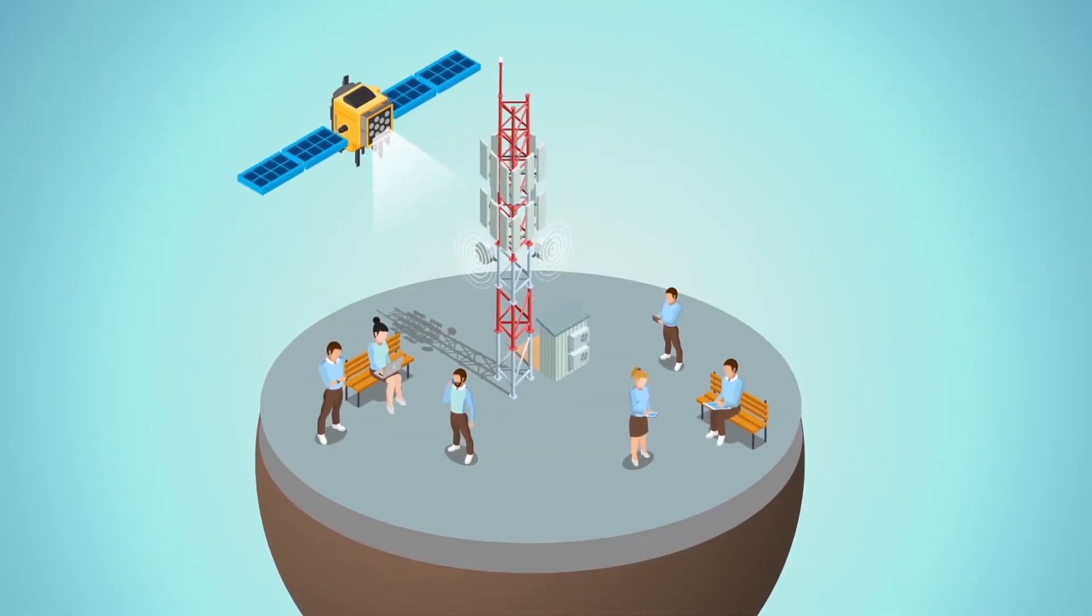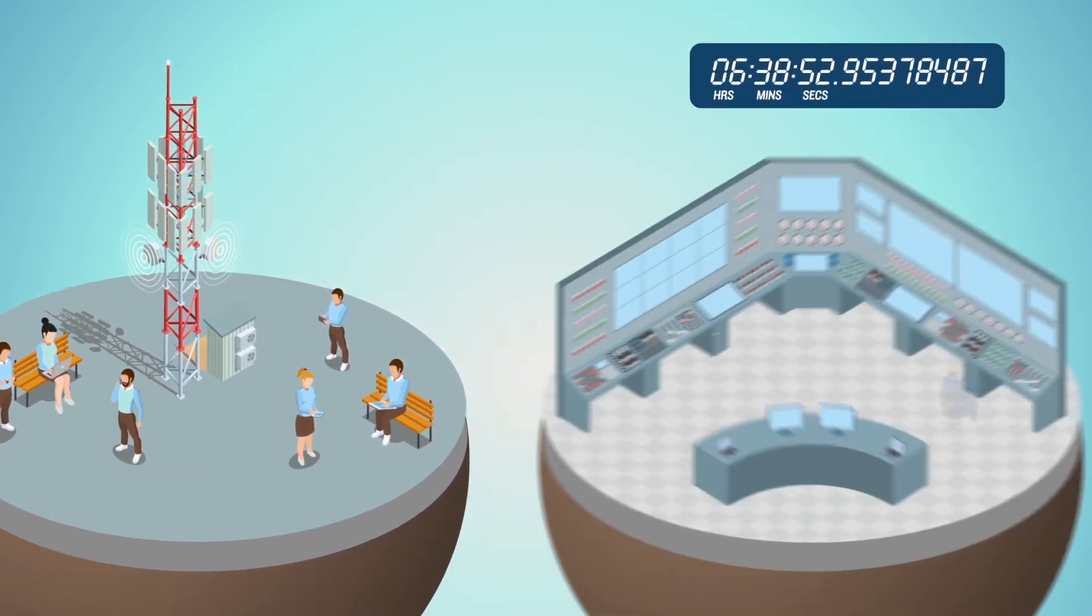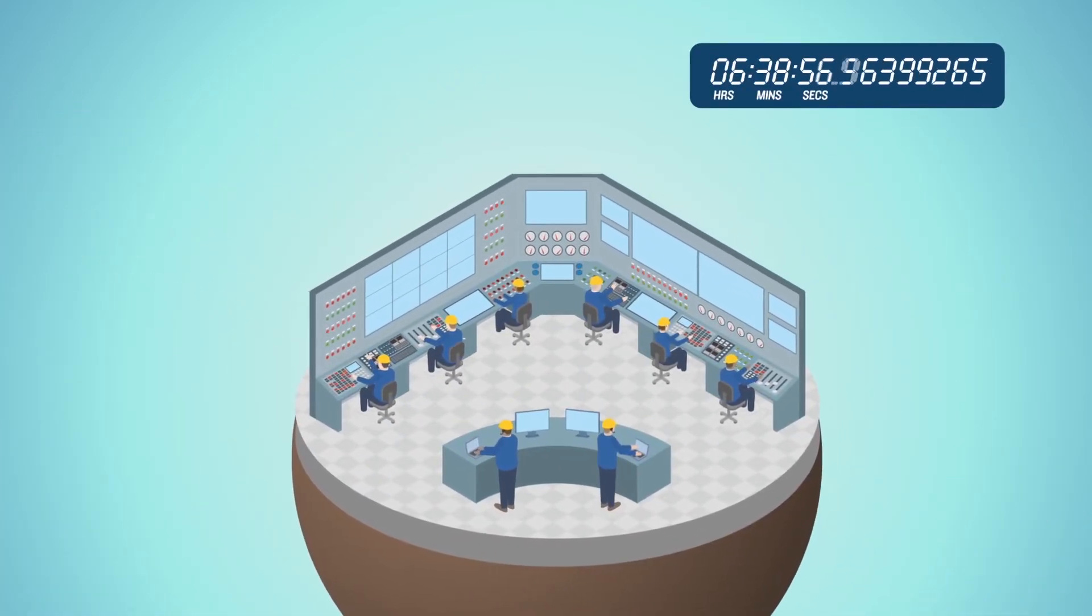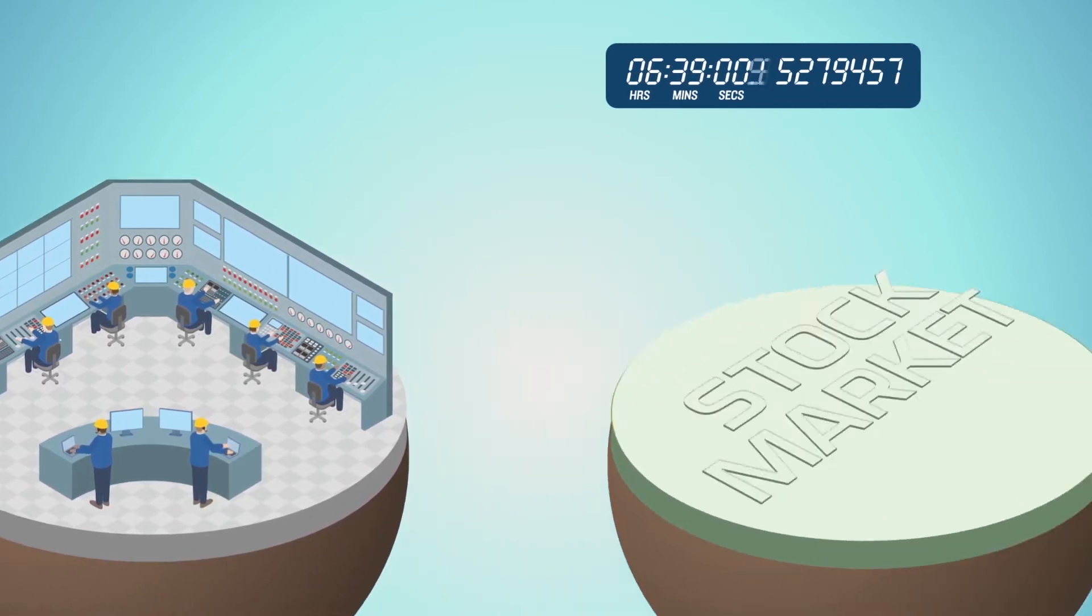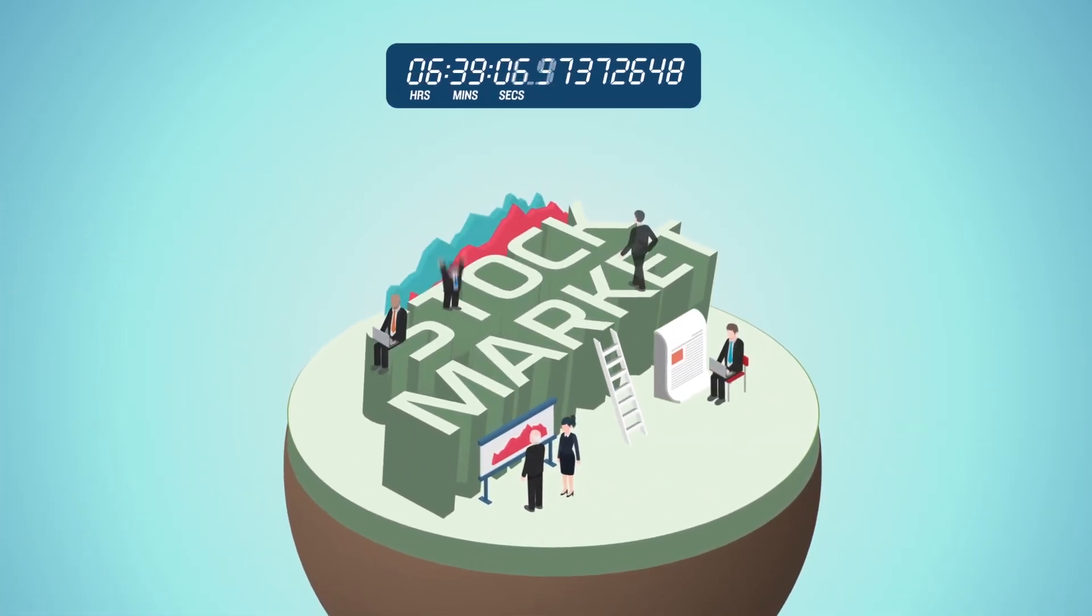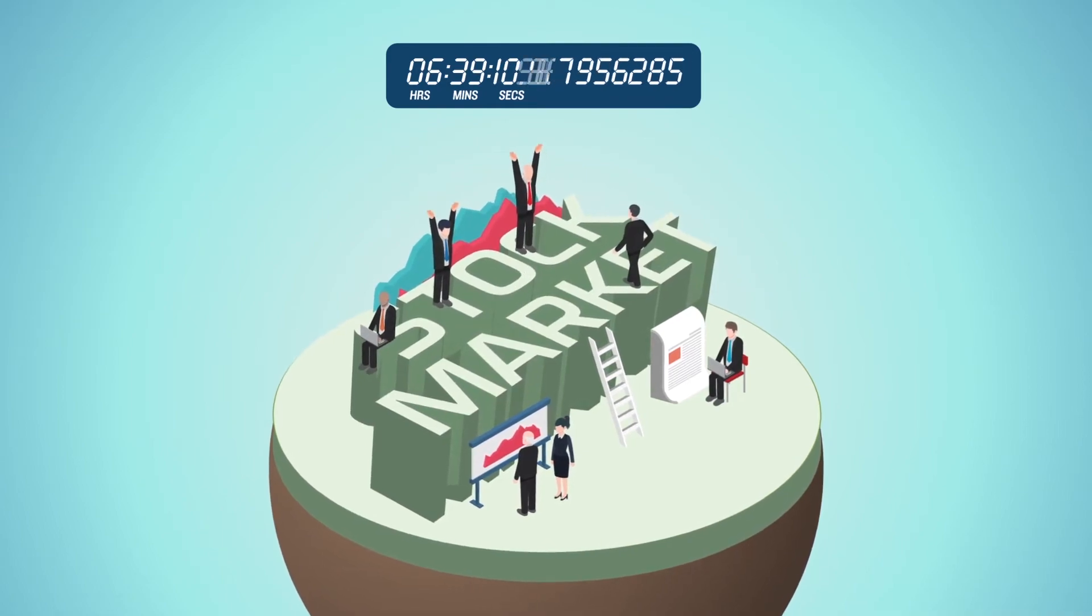But phone networks need to precisely time data packets, power companies need to manage electricity sent over their network, and financial institutions timestamp transactions, timed to the millisecond.